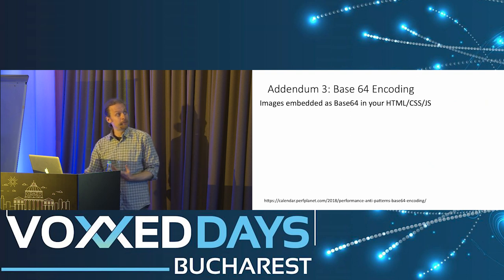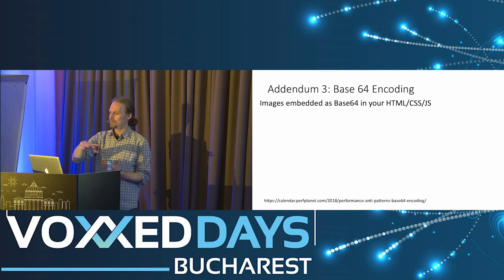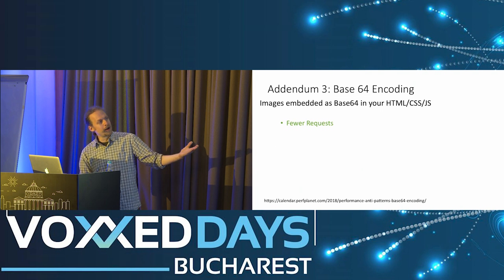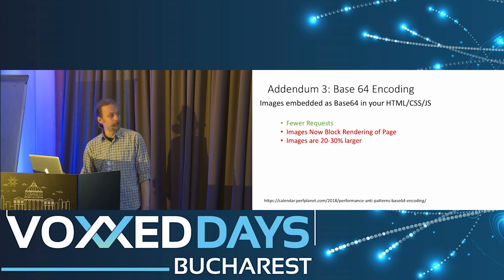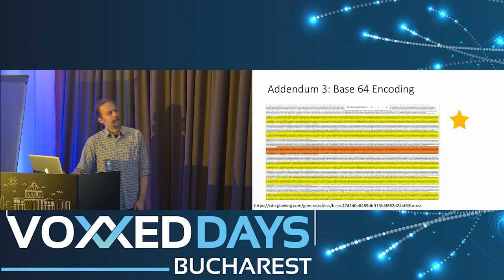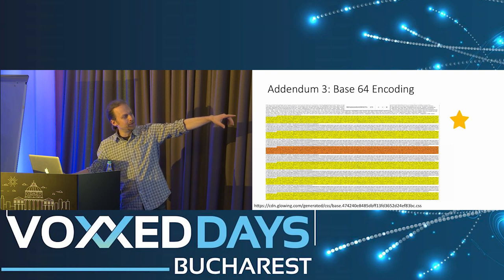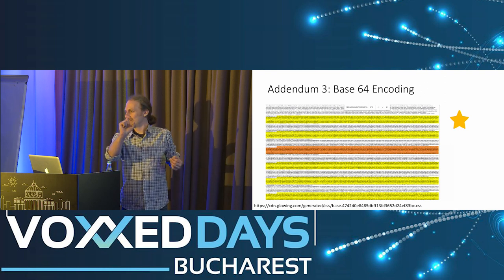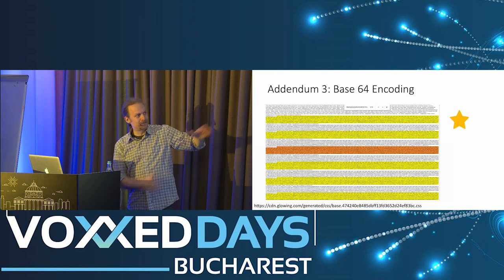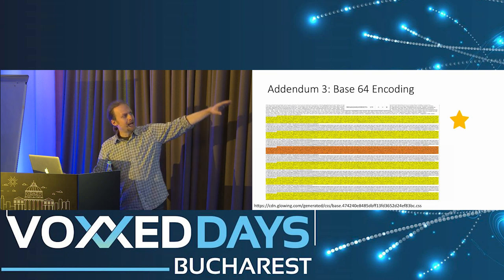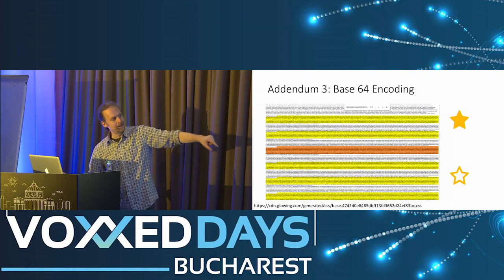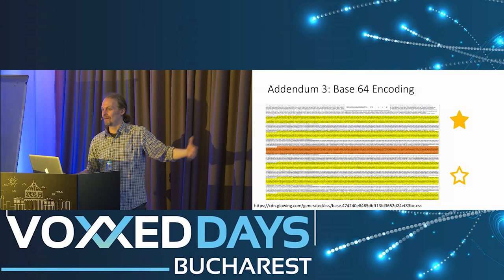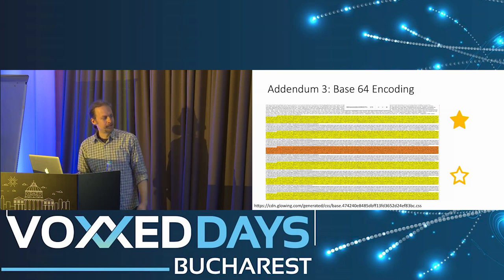A lot of people ask about base64 encoding images and putting them inline as text. The good thing is fewer requests, but the images then block HTML or CSS from downloading. Base64-encoded images are larger, can't be cached, and can't be easily referenced. One webpage had 16 instances of a base64-encoded star in one CSS file — both highlighted and open versions — ballooning the CSS file to a crazy size. Not recommended.